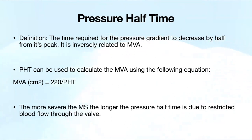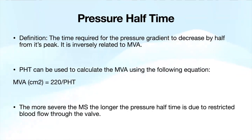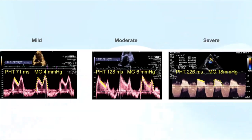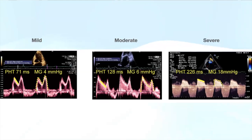Pressure half-time is the time required for the pressure gradient to decrease by half from its peak. It is inversely related to the mitral valve area: the longer the pressure half-time, the more severe the stenosis and the smaller the mitral valve area. The equation is 220 divided by pressure half-time, giving an estimate of the mitral valve area. Examples on CW Doppler show mild at a mean gradient of 4, moderate at 6, and severe at 18. The severe case has a pressure half-time of 226 milliseconds—greater than 150—confirming severe stenosis.